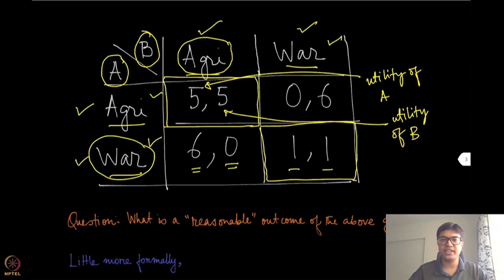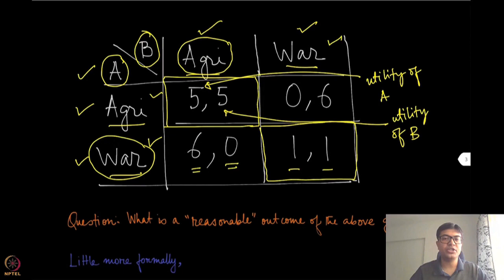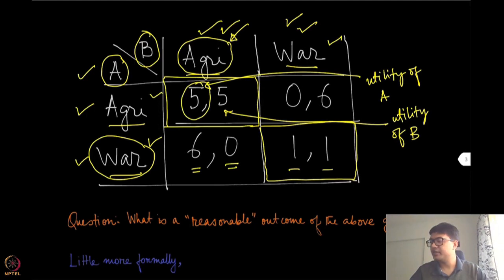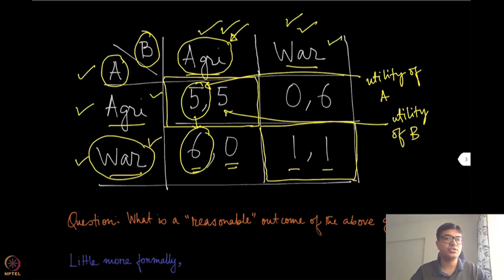Now what is the predictive guarantee we can give in this kind of scenario? If a specific agent — say agent A — is thinking about whether to go for agriculture or war, it looks at what happens when the other agent chooses agriculture versus war. When player B is choosing agriculture, player A gets a payoff of 5 if it chooses agriculture, but it gets 6 if it chooses war. So clearly war is a better option for kingdom A when the other player is choosing agriculture.